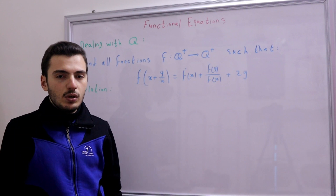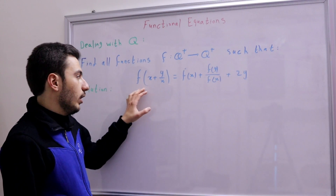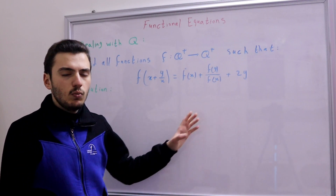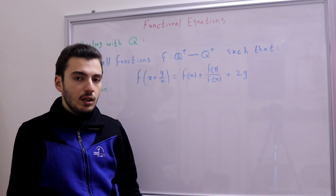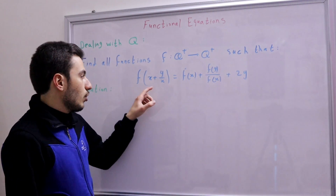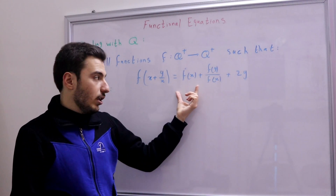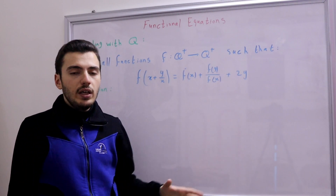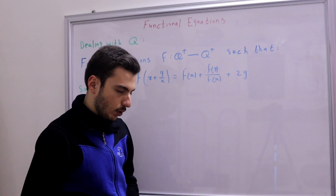That doesn't seem very helpful, so let's try substituting x=1 instead. This gives us f(x+1) on the left-hand side, which is nice because it links f(x+1) to f(x). The right-hand side becomes f(1) + 2x + f(x) divided by f(1). That seems useful — it links f(x+1) to f(x) and f(1).